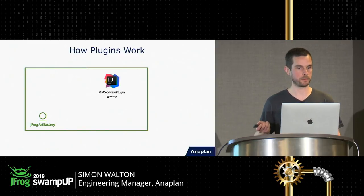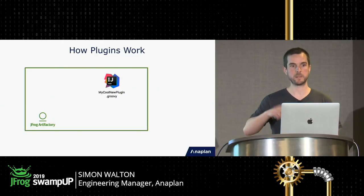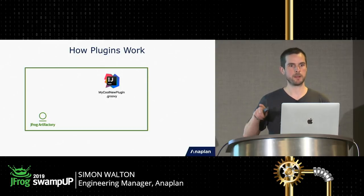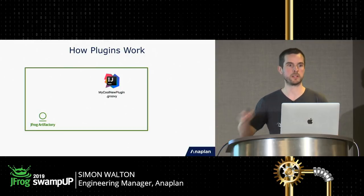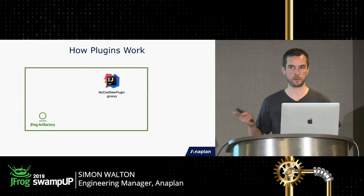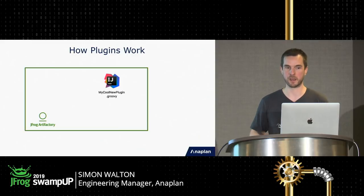The way Artifactory plugins work: you have a Groovy file that expresses your plugin logic and you deploy it into Artifactory — it sits in the plugins directory. In an HA configuration it'll be synchronized straight over to the other node. You'll also need to call a 'reload plugins' endpoint, which tells Artifactory to load the plugins into the JVM context. You can tell Artifactory to automatically look for plugins on a polling basis, but JFrog explicitly say: do not do this in production. If you reload a plugin halfway through an operation, there's undefined behavior that results.